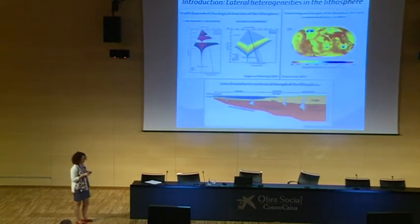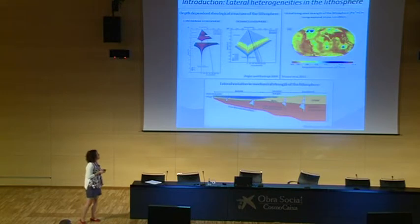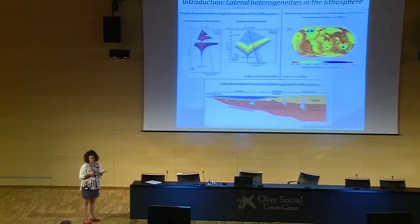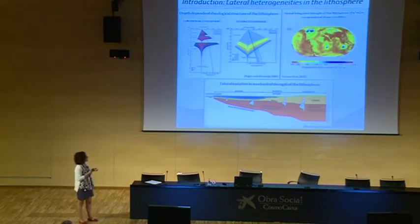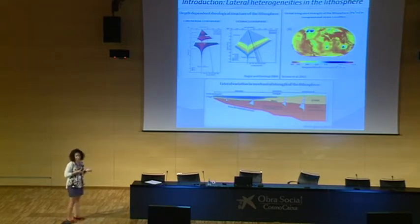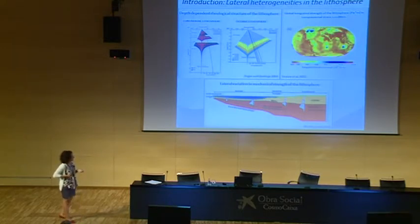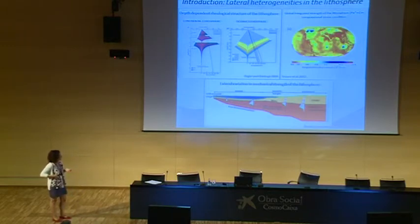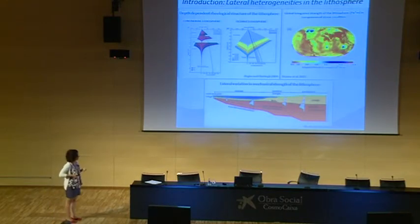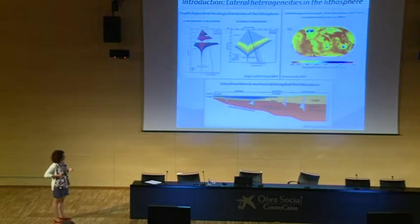One of the main parameters advocated to play an important role in strain localization is the lateral variation in strength in the lithosphere. Stresses are transmitted from active plate boundaries inside the plate, and the lithosphere reacts mainly due to its mechanical properties driven by vertical rheological layering, but also to lateral variation. As we can see in the schematic cross-section, there is a huge contrast between passive margins — extended and weakened — and the core of the continent, which is much stronger.